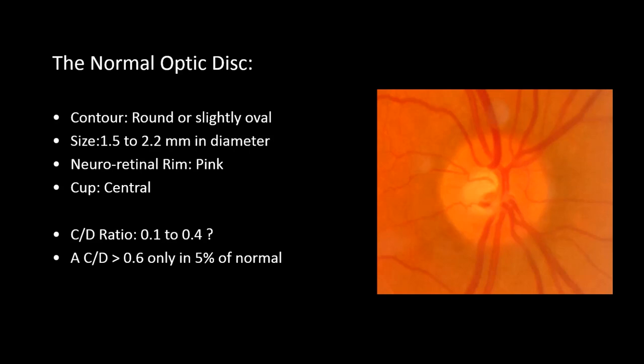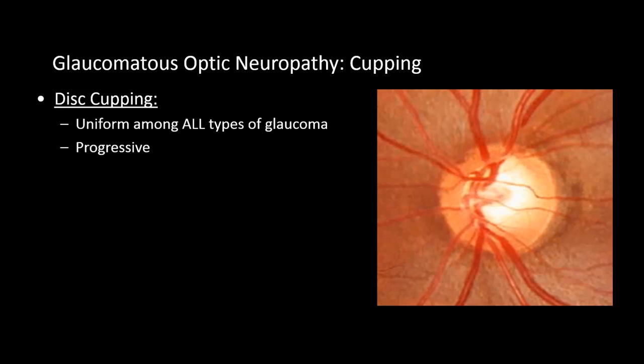Having identified the location of the optic disc, let's discuss features of normality and glaucomatous optic neuropathy. The normal optic disc is round or slightly vertically oval, with a 1.5 to 2.2 mm average diameter, a pink neuroretinal rim, and a central cup. The usual cup-disc ratio is about 0.1 to 0.4, and a cup-disc ratio more than 0.6 is only present in 5% of normal individuals. Progressive cupping of the optic disc is the hallmark of glaucomatous optic neuropathy, resulting from progressive thinning of the neuroretinal rim with excavation. However, the mere presence of cupping alone is non-specific for glaucoma diagnosis.